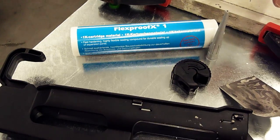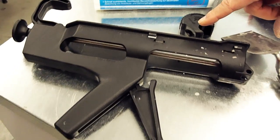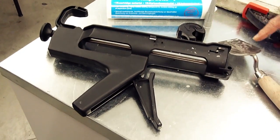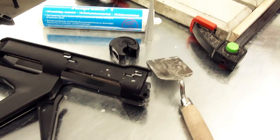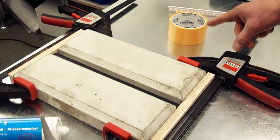To apply FlexProof X1, an ordinary cartridge gun, a spatula, and possibly a tape is required.